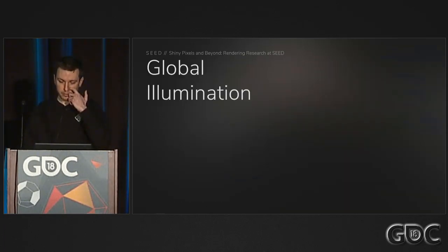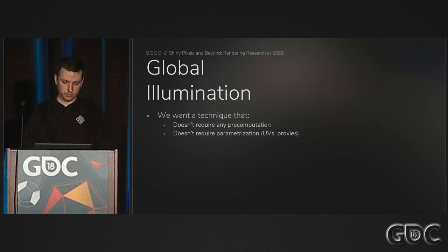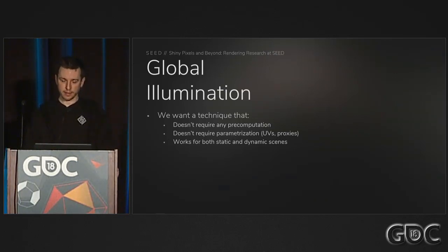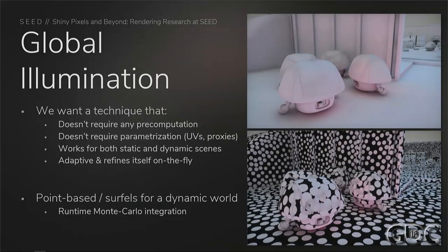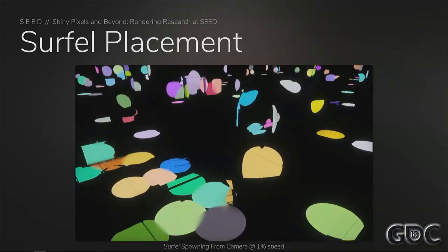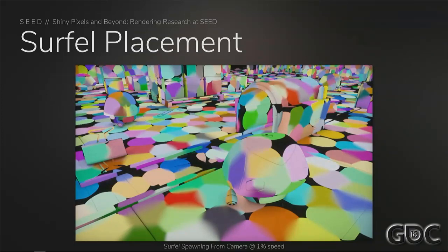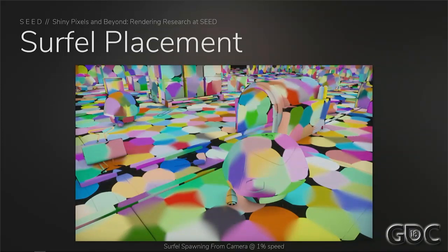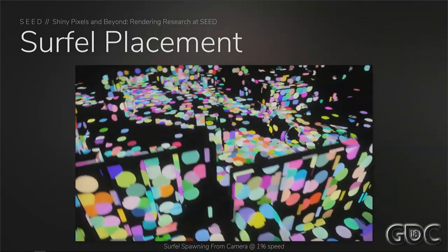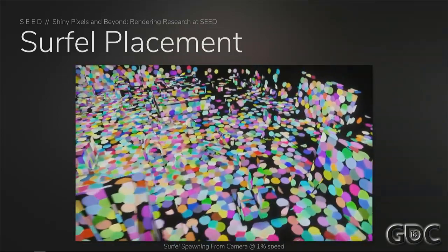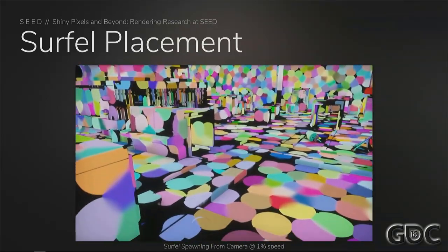When it comes to indirect lighting or global illumination, for this project we wanted a technique that doesn't require any precomputation, doesn't require parameterization — so no UVs, proxies, or anything like that — and works for both static and dynamic scenes, is adaptive, and refines itself on the fly. We went for a point-based approach where we have surfels in the world where we path trace irradiance and do runtime Monte Carlo integration. We prioritize surfel spawning by camera position, orientation, and depth. Once a surfel is spawned, it gets added to a global preallocated array with atomic add. I had to slow the video down to around one percent because otherwise it's too fast to see the surfels appear progressively.